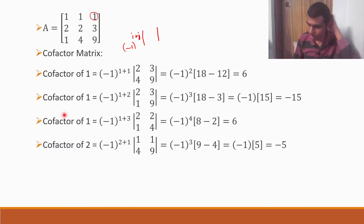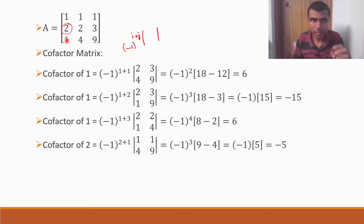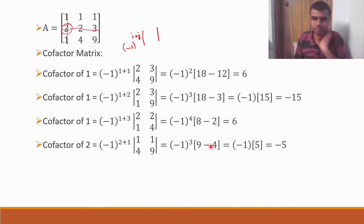This is where some people get confused. Cofactor of the element 2 (row 2, column 1): (−1)^(2+1) × det[1 1; 4 9]. Close its row and column — what's left is 1, 1, 4, 9. Be careful here — some people make mistakes. So: 1×9 − 4×1 = 9 − 4 = 5. Then (−1)^3 = −1, so the cofactor is −1 × 5 = −5.